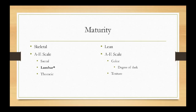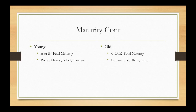Maturity is an extremely important part of quality grading — it tells the grader what quality grades the carcass is viable for. Young maturity is A or B final maturity, and those are eligible for prime, choice, select, and standard. Older cattle are C, D, and E final maturity — those are commercial, utility, and cutters. Note that B final maturity requires a higher degree of marbling in the ribeye to grade the same as an A maturity carcass, because older animals tend to be tougher.